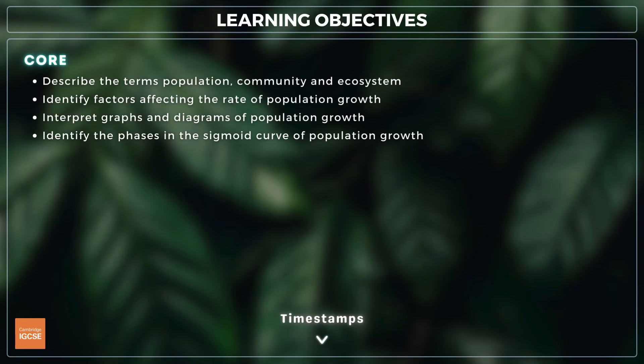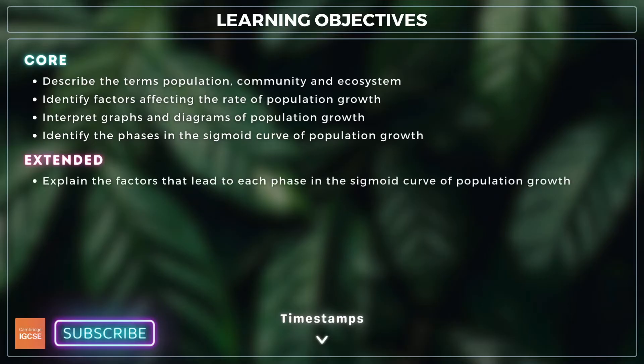For this lesson, you need to describe the terms population, community and ecosystem, identify factors that affect rate of population growth, and identify the phases of the sigmoid curve of population growth. For extended, you also need to explain the factors that lead to each phase in the sigmoid curve.